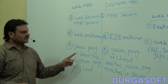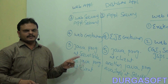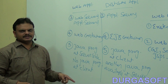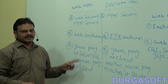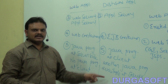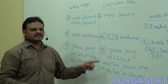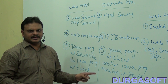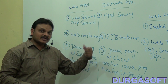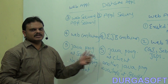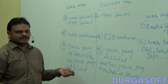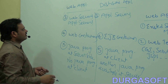So in web applications, a Java program is maintained only at the server side; no Java program is maintained at the client side. But in distributed applications, both the client site and the server site maintain separate Java programs.